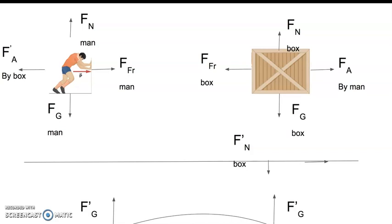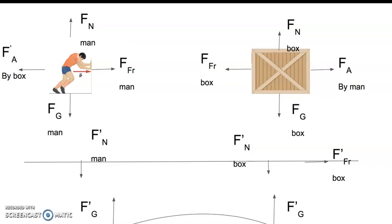And for force of friction: if the box has friction to the left because of the surface, then the surface has friction to the right because of the box. Same thing for the man — if the surface is pushing up on the man, the man is pushing down on the surface. And if there's friction between the surface and the man to the right, there's also friction from the surface on the man to the left.